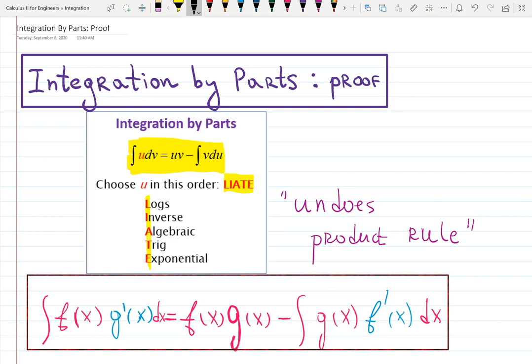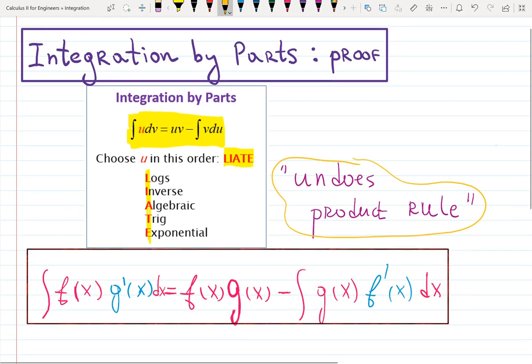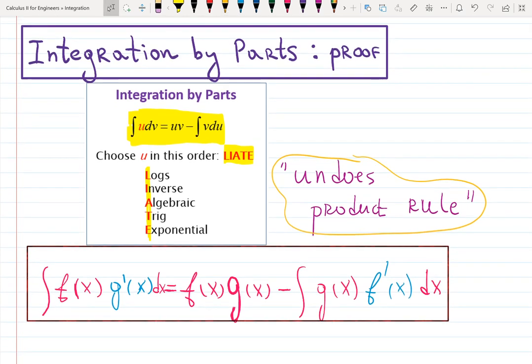In this video I want to show you how this formula was created. We do mention in class that integration by parts undoes the product rule. How is that possible? We don't really see a product rule here in the formula, but actually it exists.